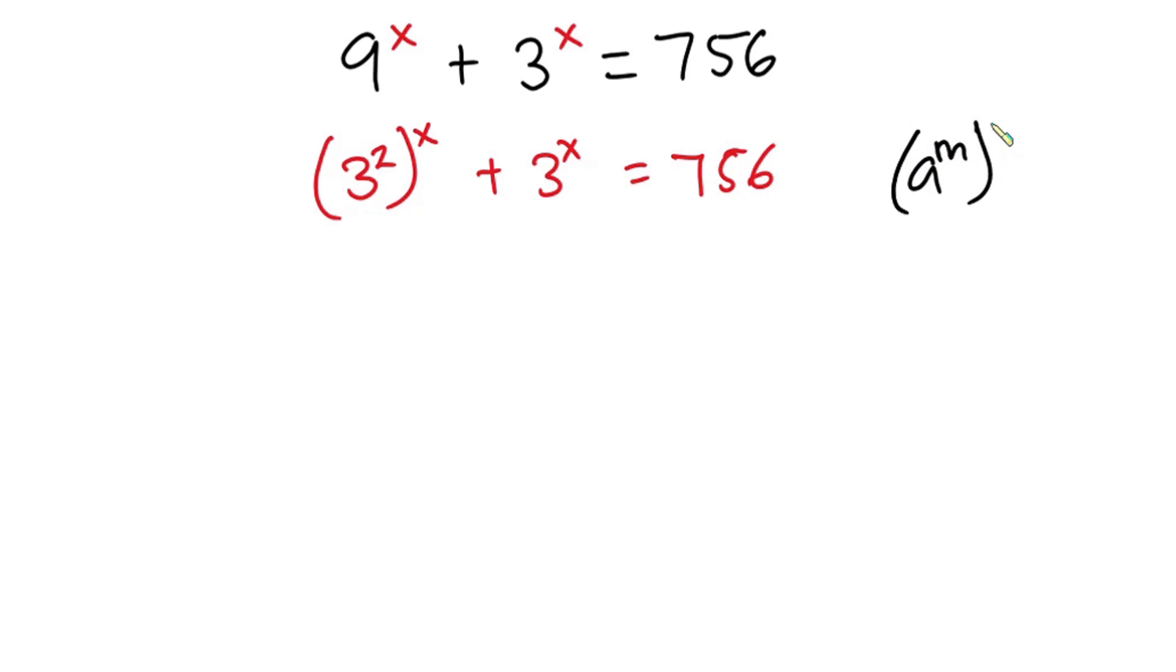From indices, if I have a to the power m to the power n, this is the same as a to the power n to the power m. So this whole thing could be written as 3 to the power x to the power 2.